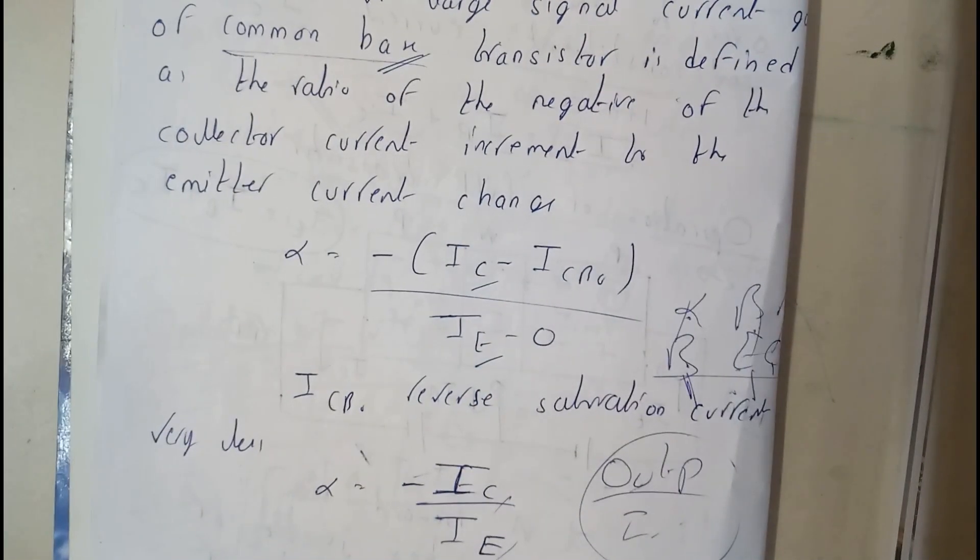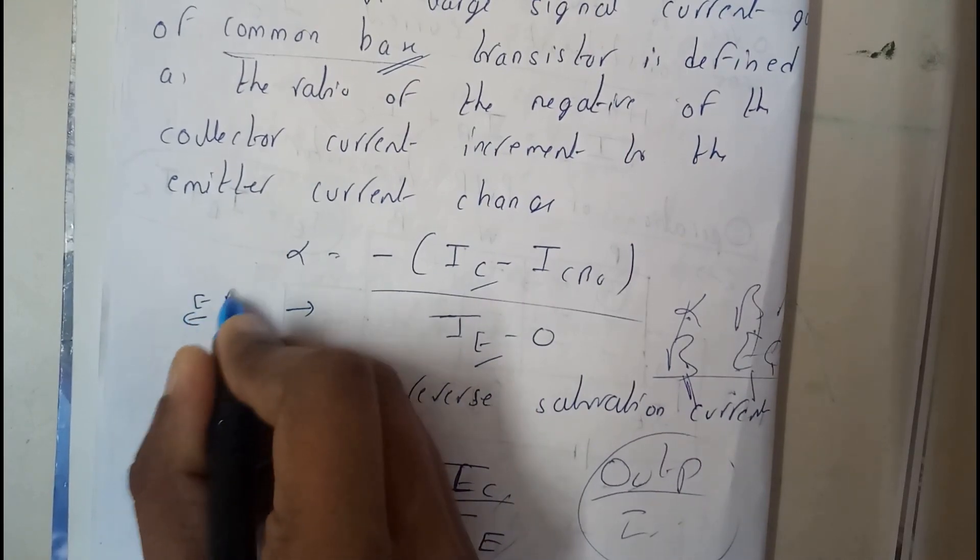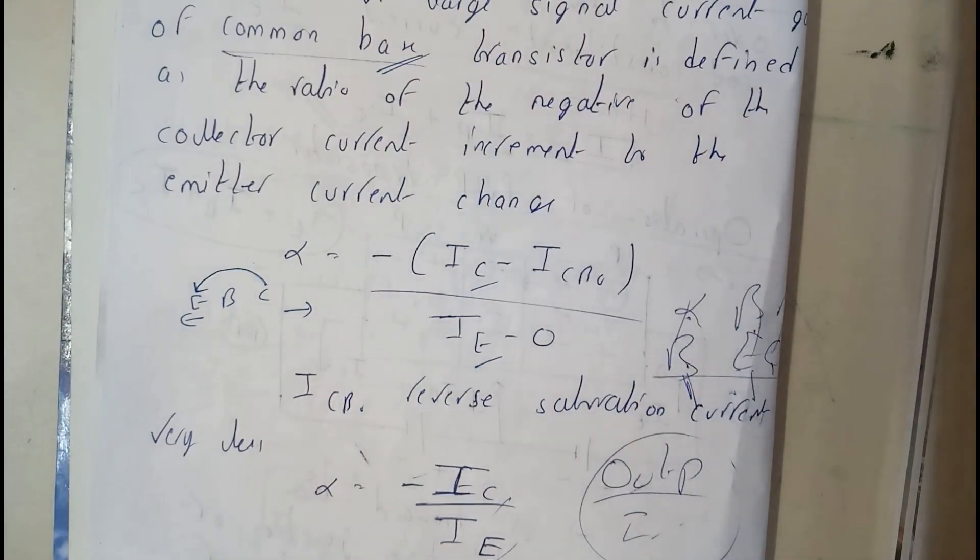There is nothing much to worry. So you can indirectly say that we will be having emitter, base, collector, right? So it is nothing but output current by input current. That's how I remember it guys.